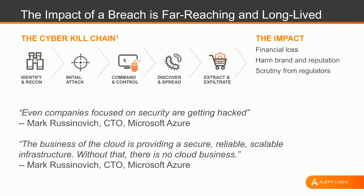In order to understand all that, we first need to understand the motivations of our attackers and how they operate. Impacts of breaches are huge — you'll see in the press on a regular basis somebody being hacked, and it's far reaching and long lived. The average is around 205 days before an attacker gets detected. How we look at it at AlertLogic is we use a common framework, which is the cyber kill chain. If you haven't come across it before, it's worth going and having a look. The concept is that this is the typical approach an attacker would take in order to compromise a system.